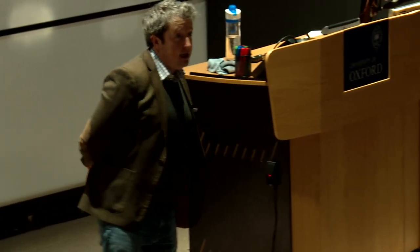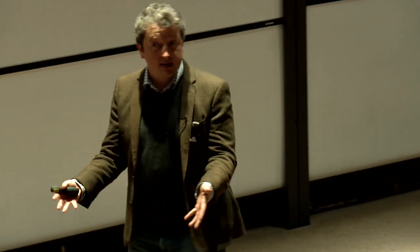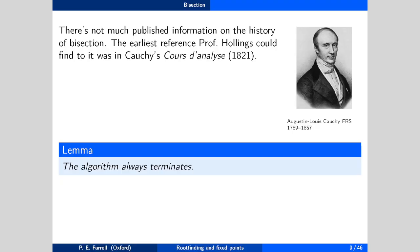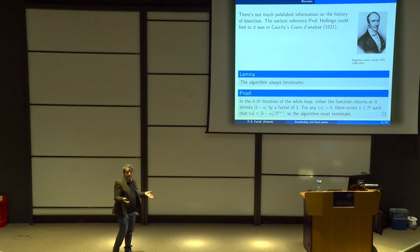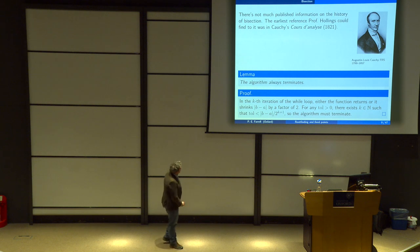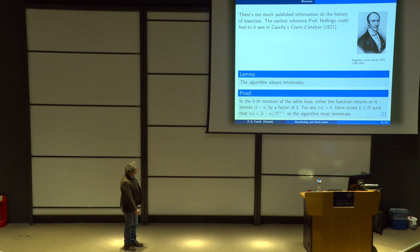Let's ask the questions we ask of algorithms. Does this algorithm terminate? The answer is yes — the algorithm always terminates. In the k-th iteration of the while loop, either the function returns, in which case it terminates, or it shrinks |b - a| by a factor of 2. For any given tolerance, by the elementary properties of the real numbers, there exists some natural number k such that (b_0 - a_0) / 2^(k-1) satisfies the inequality. So the algorithm has to terminate — if you shrink the interval by 2 enough times, you'll always meet whatever tolerance you set.